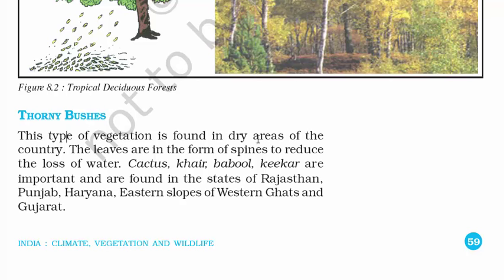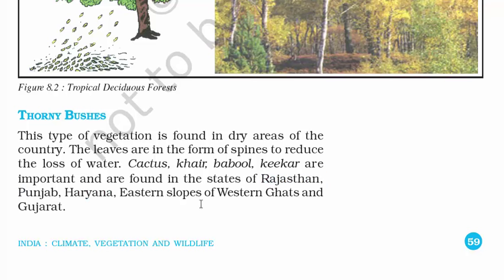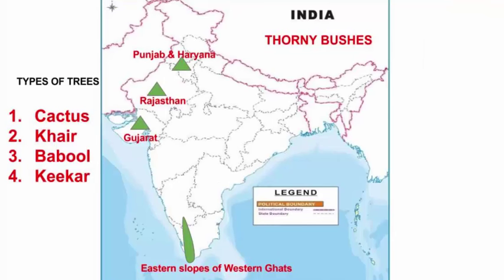The next type of vegetation is thorny bushes, found in dry areas of the country. The leaves are in the form of spines to reduce the loss of water. Cactus, khair, babul and kikar are important trees. They are found in Rajasthan, Punjab, Haryana, the eastern slopes of the Western Ghats and Gujarat. I will pinpoint all of these on a map and put a link in this video so you can download and print it for learning.